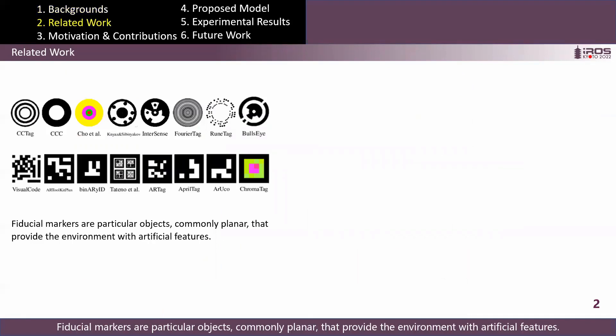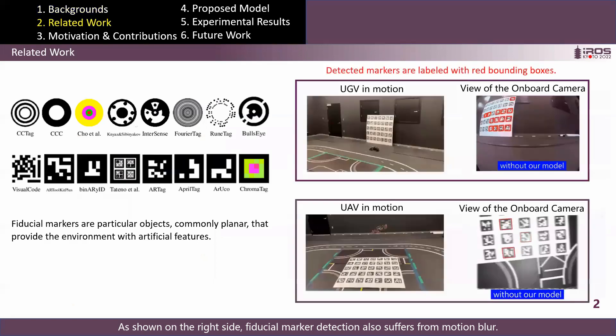Fiducial markers are particular objects, commonly planar, that provide the environment with artificial features. As shown on the right side, fiducial marker detection also suffers from motion blur.